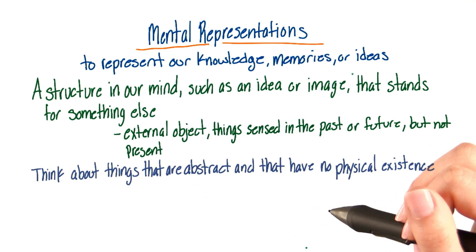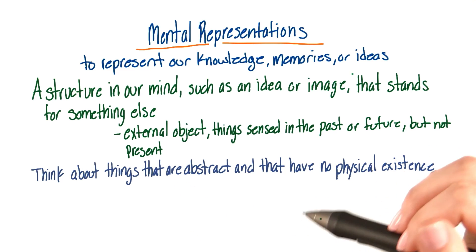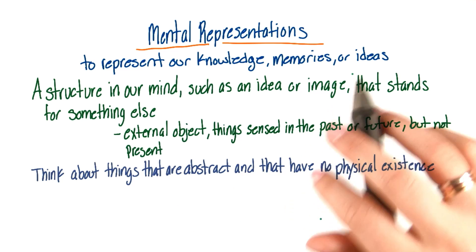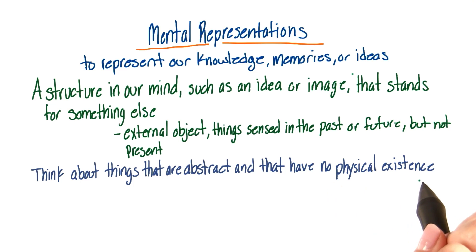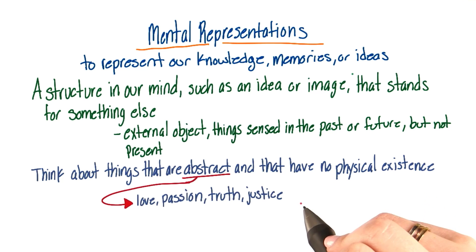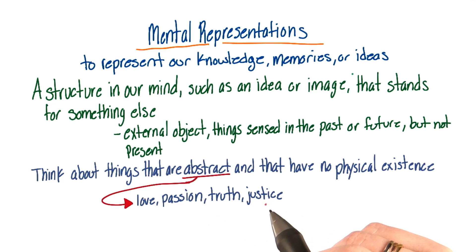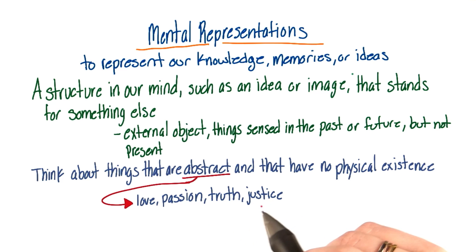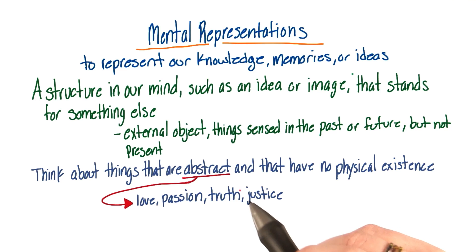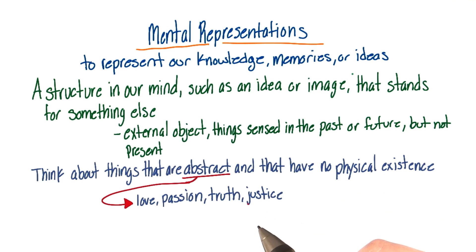These mental representations allow us to think about things that are abstract and have no physical existence. Earlier in this lesson, when we talked about language, we asked about love and passion. We can also include things such as truth or justice as abstract ideas that we can represent in our mind visually and verbally.